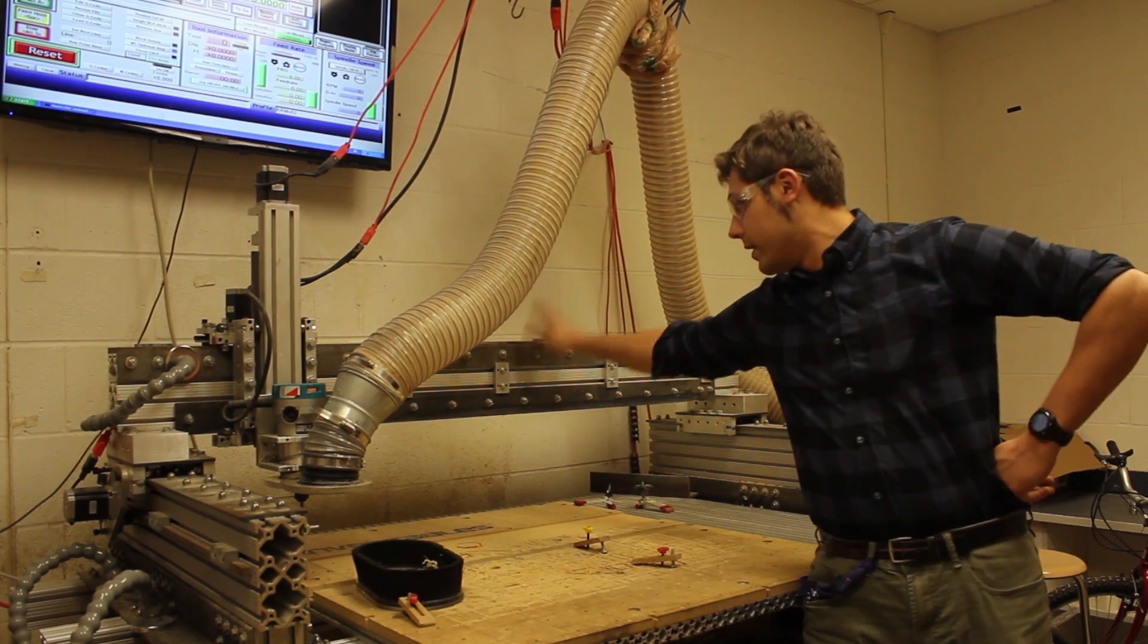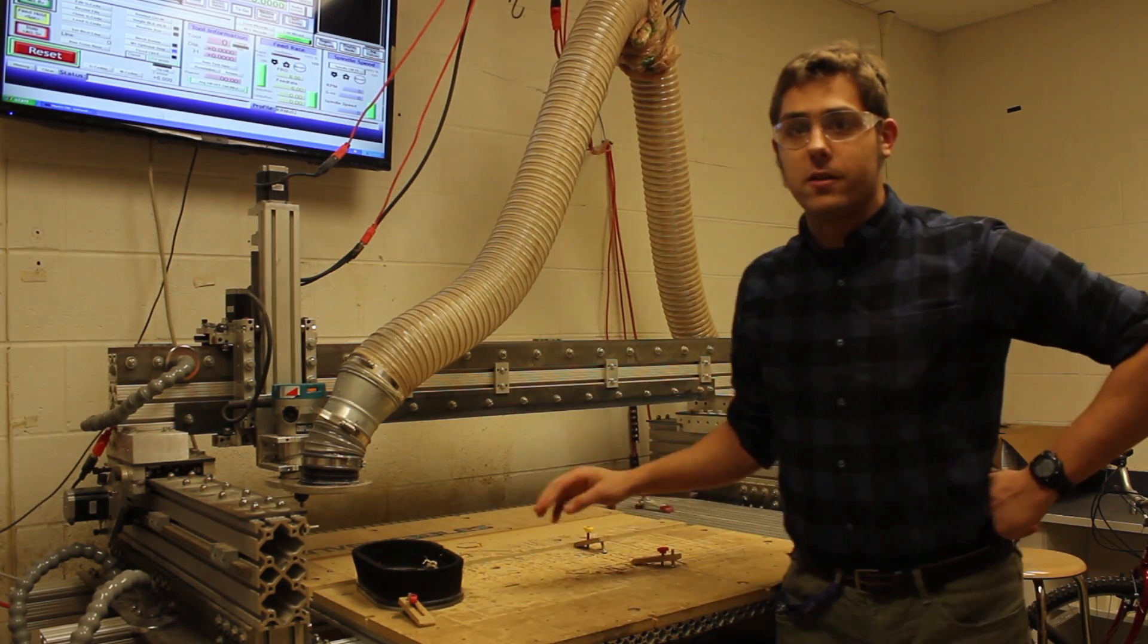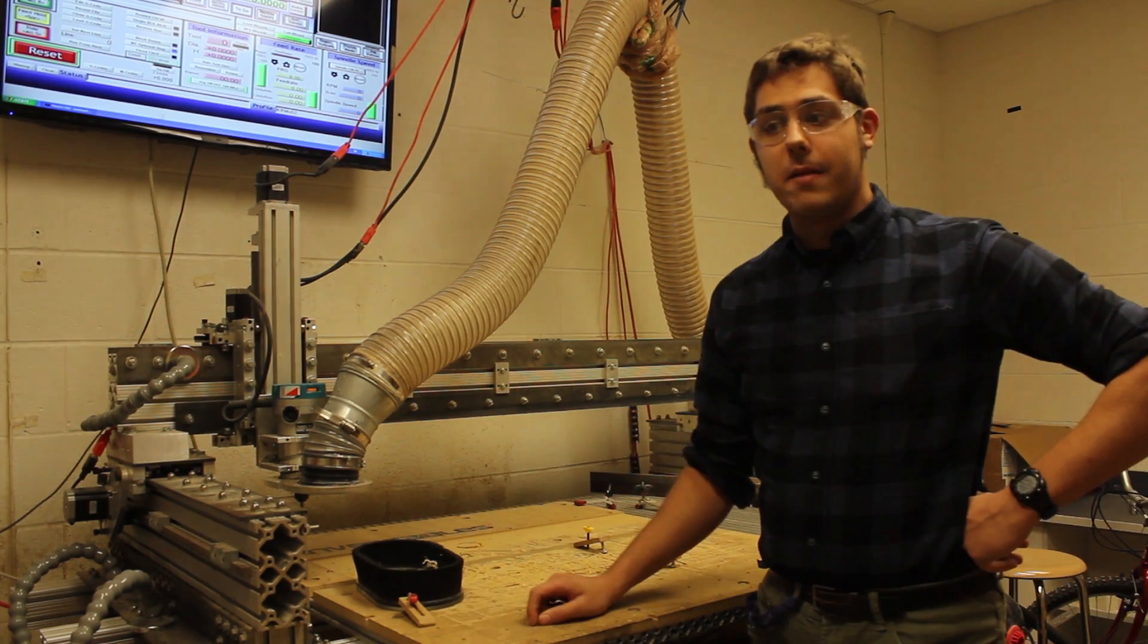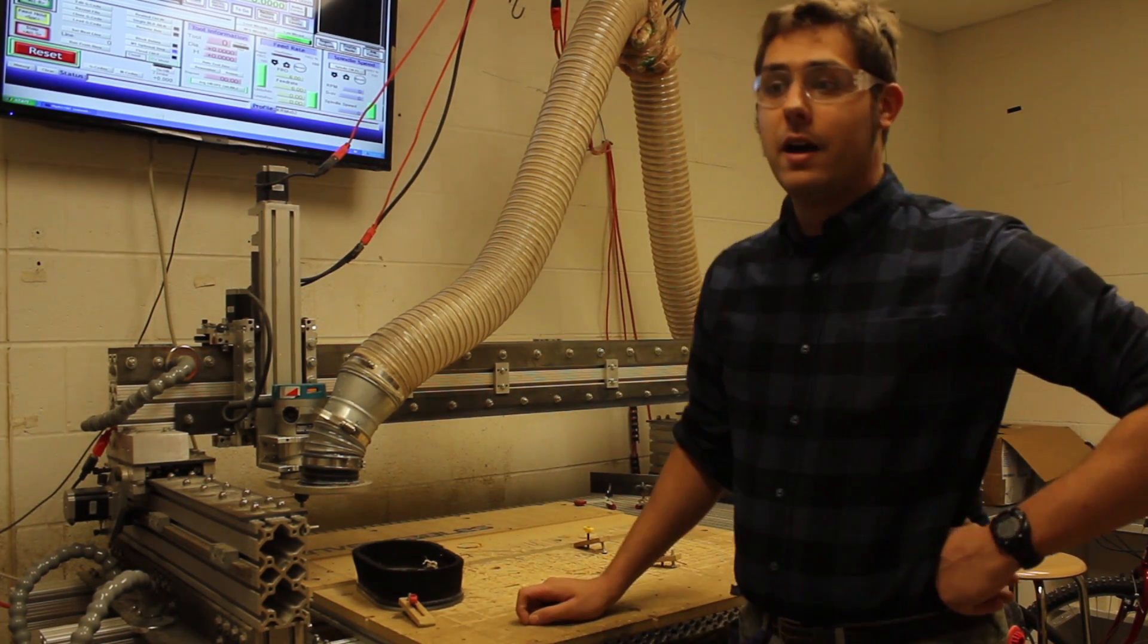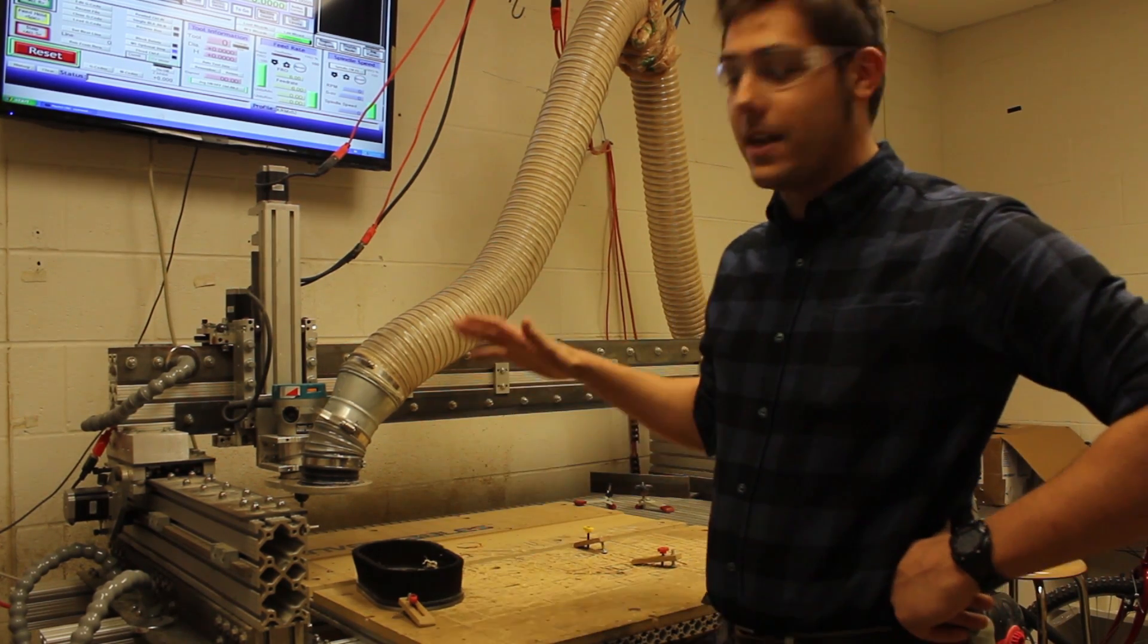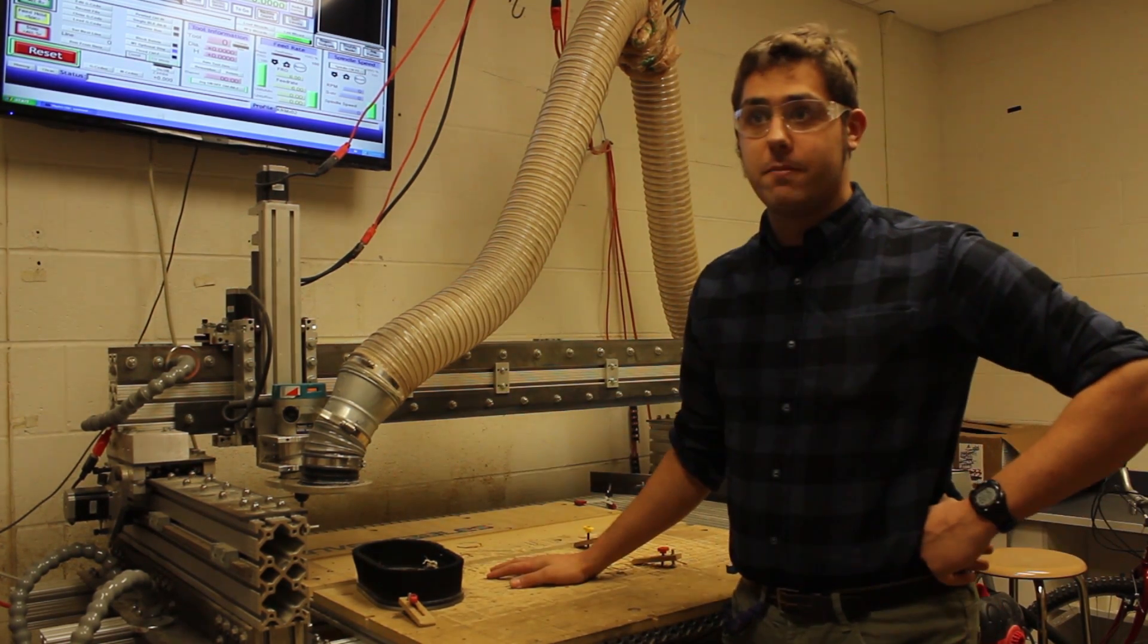It has a really robust steel and aluminum gantry system and it can process wood, metal, and plastics really easily. Today I'm going to show you how to do some basic setup and attach pieces to the machine.